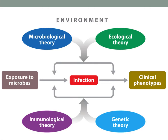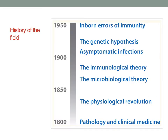Disease is attributed to microbial variation in the microbiological theory, to environmental variation in the ecological theory, to a deficiency of acquired somatic adaptive immunity in the immunological theory, and to inborn errors of germline-encoded immunity in the genetic theory. These four theories are both complementary and overlapping. The misunderstanding between microbiologists, immunologists, and geneticists stems from the historical and biological theories of infectious diseases.